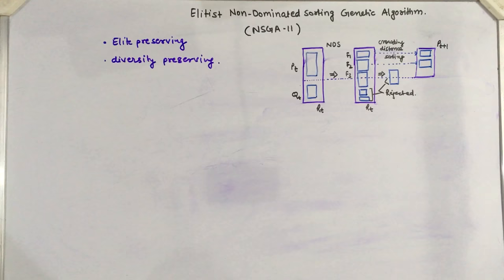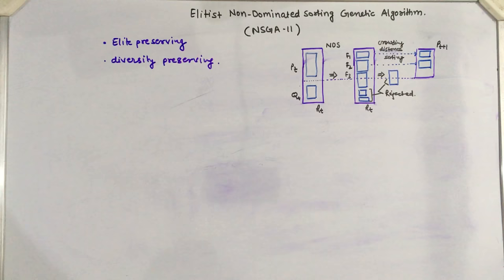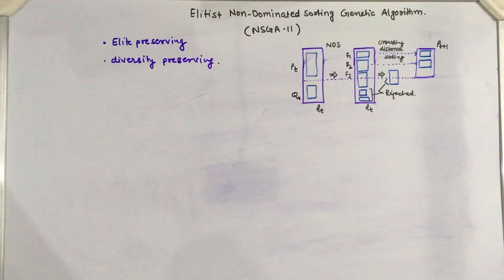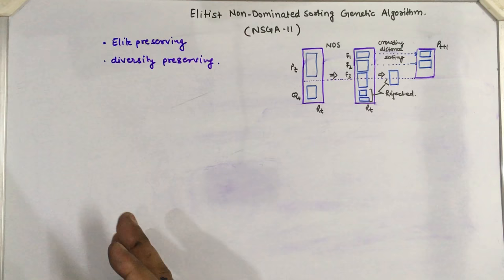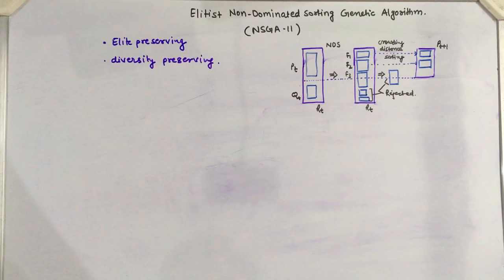Hello guys, in this video we will learn about the most popular multi-objective optimization algorithm, namely NSGA-II. The full form is Elitist Non-Dominated Sorting Genetic Algorithm. Some terms you already know — non-domination, domination, elitism, and genetic algorithm. If you are not aware of the genetic algorithm, I suggest you first go through the basics of genetic algorithm, then see this video on NSGA-II, because there are various concepts in NSGA-II similar to the genetic algorithm.